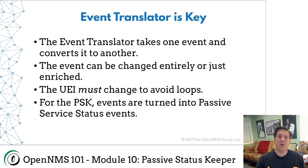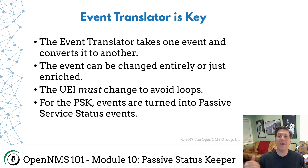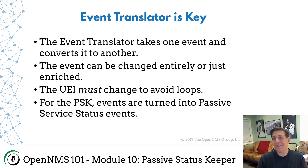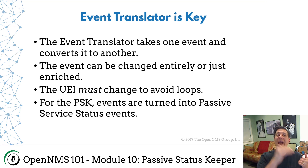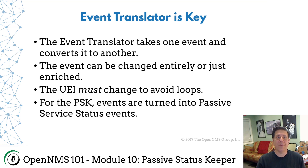So if that service goes down — if it's an interface on a router, if it's a web server — when the node lost service event comes in, the Event Translator can take that and translate it into an enhanced event. In the operator instruction field or one of the other fields of the event, you can put: 'Here's the impact, here are the customers that are impacted by this.' So it's really, really kind of cool.